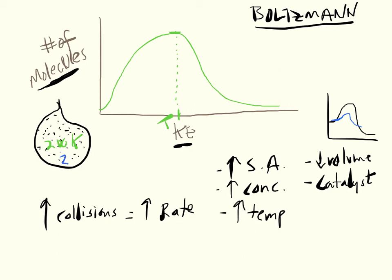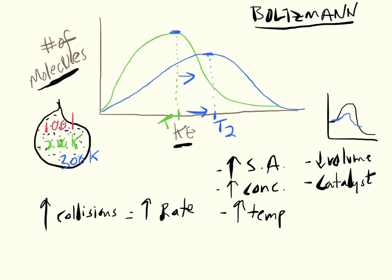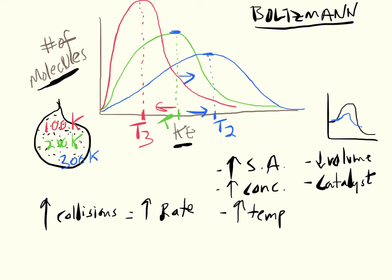If we heat the gas to 300 Kelvin, the molecules have higher kinetic energy, so the distribution shifts to the right and the peak height decreases — the curve gets more spread out. At 300 Kelvin the curve is further right indicating higher temperature. If we cool it to 100 Kelvin, molecules have less kinetic energy, the curve shifts left, and the height of the peak increases. The key concept is that increasing collisions between molecules increases the reaction rate.